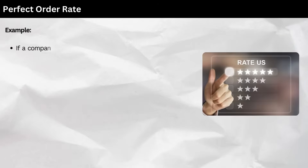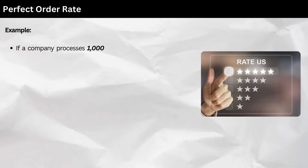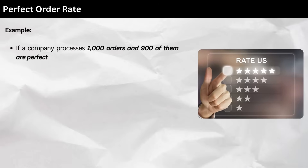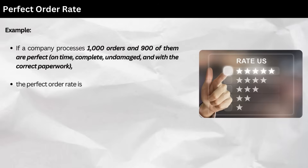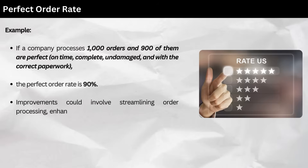Example: if a company processes 1,000 orders and 900 of them are perfect — on time, complete, undamaged, and with the correct paperwork — the perfect order rate is 90%. Improvements could involve streamlining order processing, enhancing quality control, and better training for logistics staff.